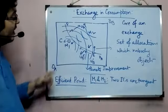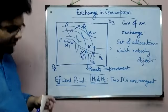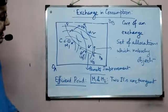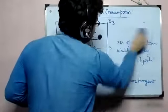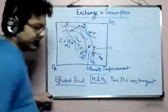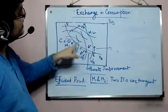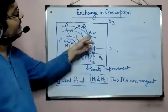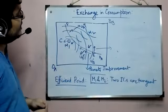At those other tangency points within the core, both individuals' utilities have increased — so they are also efficient points. This tells us that given an endowment like E, we can have a host of Pareto efficient allocations. Where we will actually move depends on a lot of things. So let us then move into what we call a contract curve.